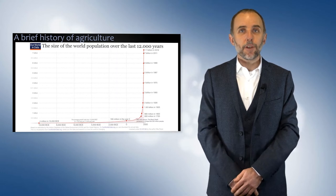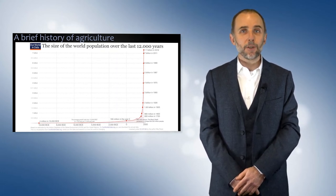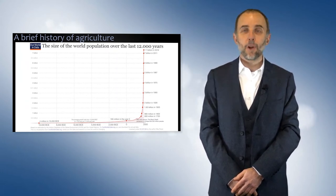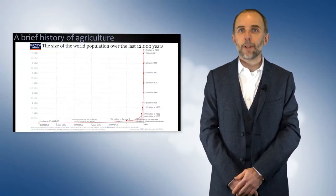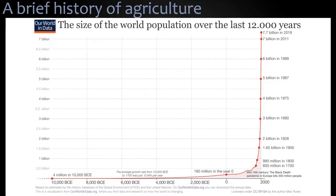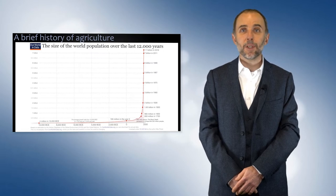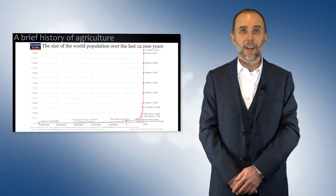That brief history of agriculture is parallel to the history of population growth in the world. This graph is showing that in the last two or three hundred years we've experienced the most rapid increases in population. This population increase could only have occurred because of our ability to produce more food and also to provide more clean water and to generate sufficient energy to meet our needs. Without those increases in food, water, and energy, we would not be able to support this population. So agriculture is a big part of the reason why our society is as it is today.